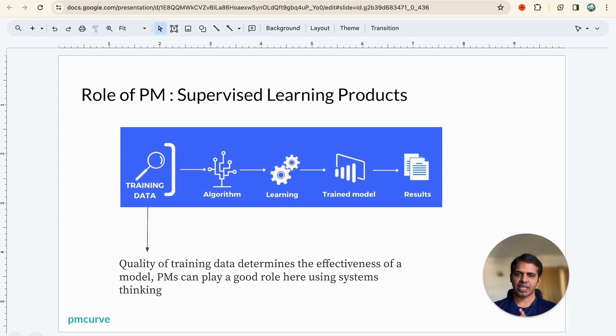Where does the role of PM come in? When it comes to training data, the PM's role is very important because the quality of training data will determine the effectiveness of the model. PMs can play a good role here because PMs know the holistic side of things that affect a particular decision or problem. PMs can use that knowledge to say, these are the factors which are going to affect this particular output. PMs can play a huge role in identifying how the training data should look.